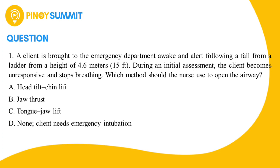Number one: A client is brought to the emergency department awake and alert following a fall from a ladder from a height of 4.6 meters (15 feet). During initial assessment, the client becomes unresponsive and stops breathing. Which method should the nurse use to open the airway? A) Head tilt chin lift, B) Jaw thrust, C) Tongue jaw lift, D) None — client needs emergency intubation.